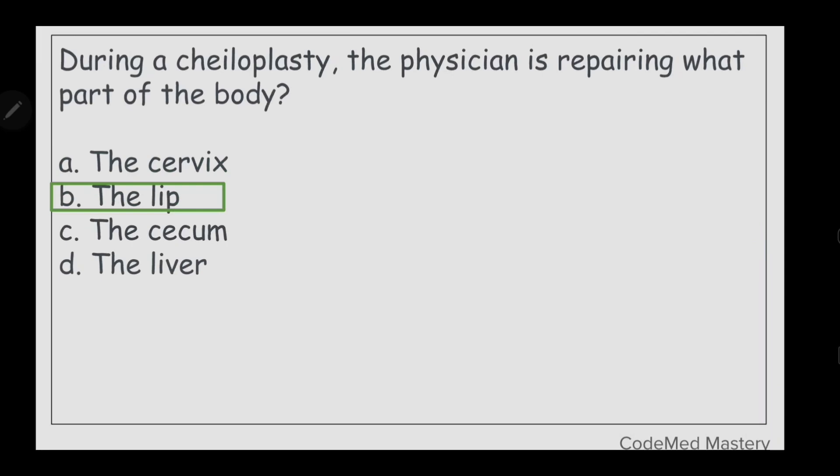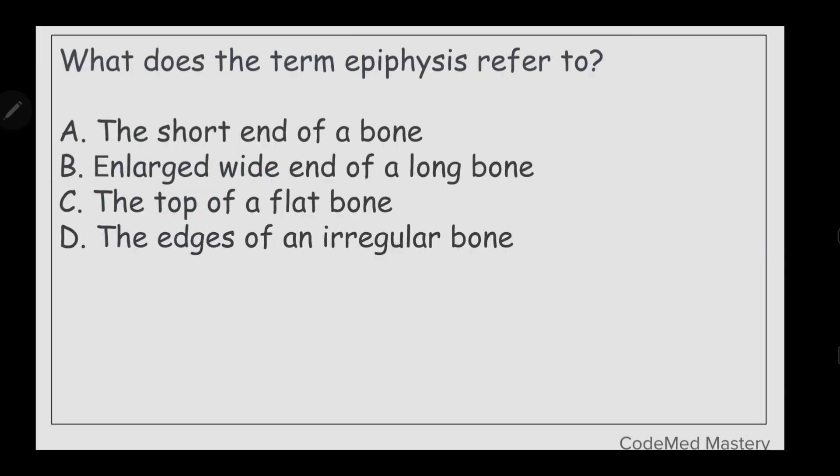Next question: what does the term epiphysis refer to? Option A: the short end of a bone, option B: enlarged wide end of a long bone, option C: the top of a flat bone, option D: the edges of an irregular bone. The right answer is option B, enlarged wide end of a long bone.